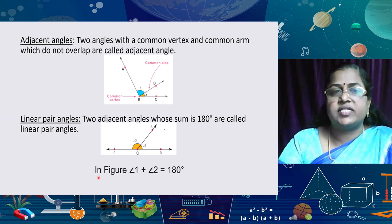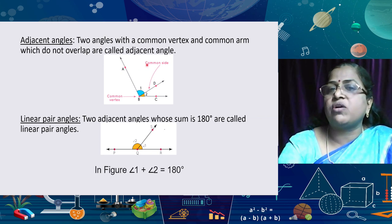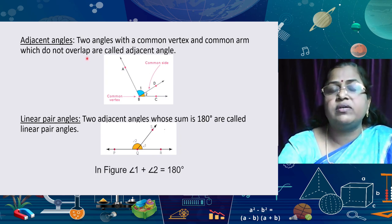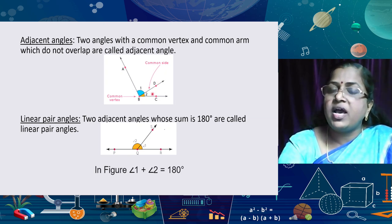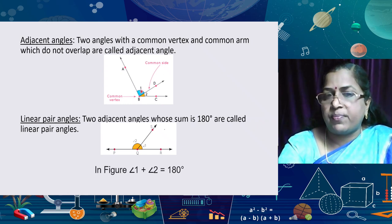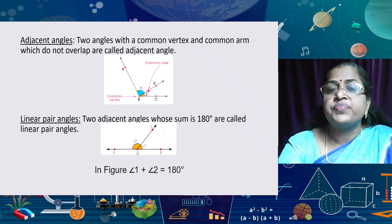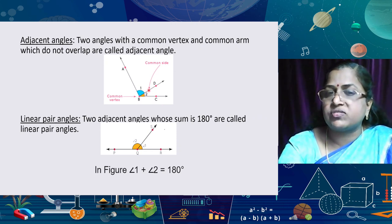We can now study adjacent angles. Students often give a wrong definition of adjacent angles. Two angles with a common vertex and a common arm which do not overlap are called adjacent angles. If you do not write 'which do not overlap,' you cannot say they are adjacent. For example, angles 1 and 2 — that is ABD and ABC — are adjacent angles. The angles lie on either side of the common arm, and B is the common vertex.